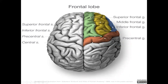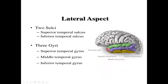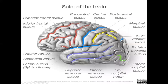The other gyri on the lateral surface include: the superior frontal gyrus, middle frontal gyrus, and inferior frontal gyrus. On the lateral aspect, you can also see the temporal gyri, and at the central surface, the pre- and postcentral gyri. The sylvian fissure is a key landmark on the lateral surface.